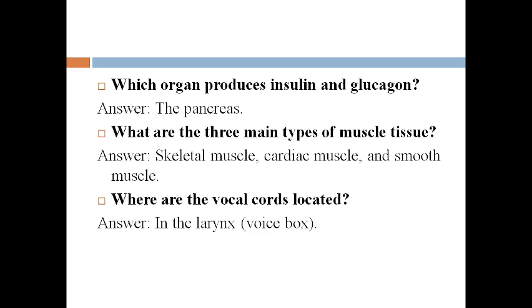What are the three main types of muscle tissue? In our body, there are three types of muscle tissues present: namely, skeletal muscle, cardiac muscle, and smooth muscle.